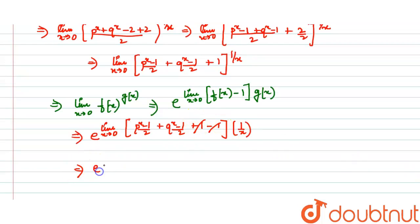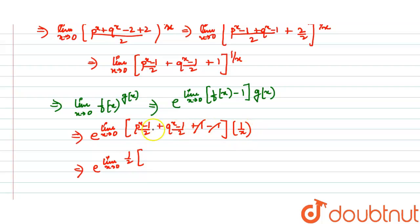So what we have is e raised to the power limit x tends to 0. Taking 1 by 2 out as common from both terms and multiplying by 1 by x, we get e raised to the power 1 by 2 times [(p^x minus 1)/x + (q^x minus 1)/x].